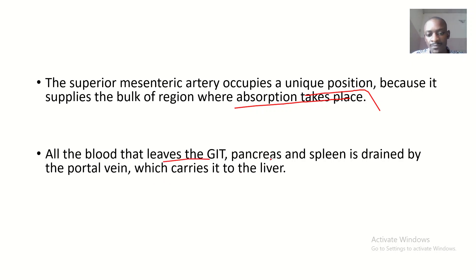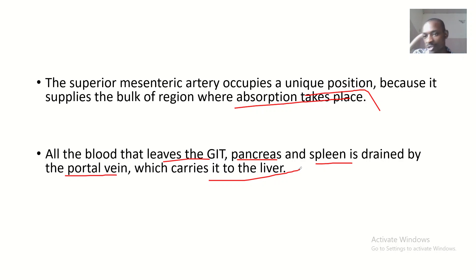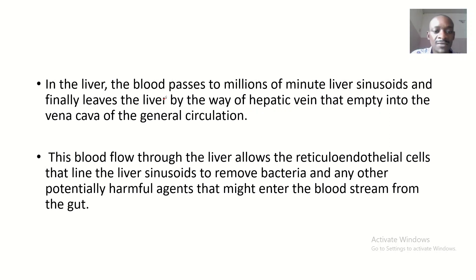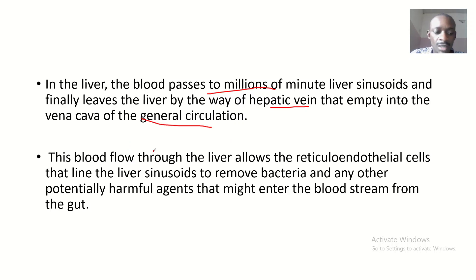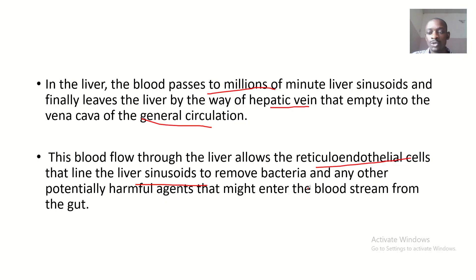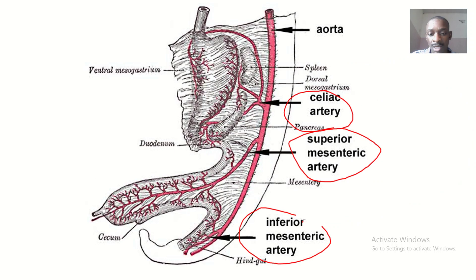All the blood leaving the GIT, the pancreas, and the spleen is drained by the portal vein, which carries it to the liver. In the liver, blood passes through millions of minute liver sinusoids and finally leaves via the hepatic veins, emptying into the vena cava and the general circulation. The reticuloendothelial cells lining the liver sinusoids remove bacteria and other potentially harmful agents that may enter the bloodstream from the gut.